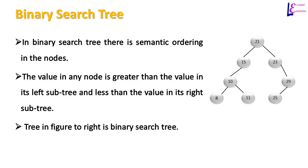A binary search tree is a binary tree, but like a sorted list, there is a semantic ordering between the nodes. The main property of a binary search tree is that the value in any node is greater than the value in any of the nodes in its left subtree and less than the value in its right subtree. In the figure to the right, the value in the root node is 21, values in its left subtree are less than 21, and values in its right subtree are greater than 21. This definition recursively holds for subtrees as well. For example, in the left subtree the root is 15, the value to its left is 10, and to the left of 10 the value is 8, while to the right of 10 the value is greater than 10, which is 11.